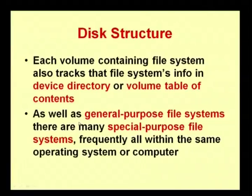The file system is classified into two groups: one is called a general purpose file system, and the other is called a special purpose file system. Both general purpose and special purpose file systems are put within the same operating system or computer. From now on, when you work with a computer, you will know the difference between a C drive, D drive, and E drive — how it gets partitioned and how it gets allocated in the disk. Let us see how a typical file system gets organized in the disk.